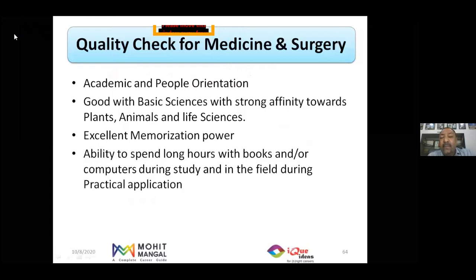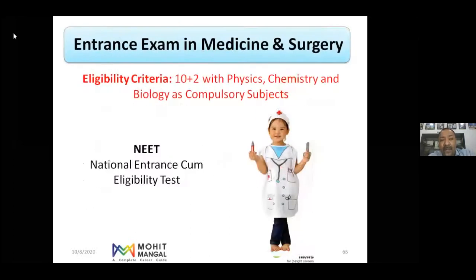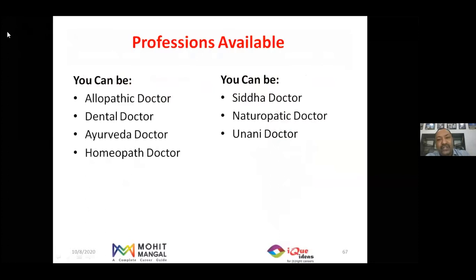Medicine and Surgery suits candidates with academic and people orientation, good with basic sciences, strong interest in plants, animals, and life sciences, excellent memorization power, and ability to spend long hours with books. Degrees include MBBS (allopathic), BDS (dentistry), BAMS (Ayurvedic), BUMS (Unani), BSMS (Siddha medicine), BNYS (naturopathic and yogic medicine), and BHMS (homeopathic medicine). Eligibility requires PCB combination. The single national entrance exam is NEET — National Eligibility cum Entrance Test.